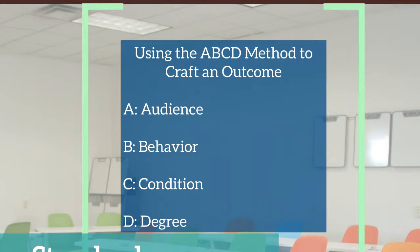One excellent way to craft an outcome is to use the ABCD method. A for audience refers to the students — you should know your students well and craft an outcome that meets their needs. B is for behavior: you should ask yourself what you want the students to be able to do. C for condition requires you to explain the circumstances or context in which you want them to learn something. D is for degree — the degree of mastery you expect at this point in time for this outcome.